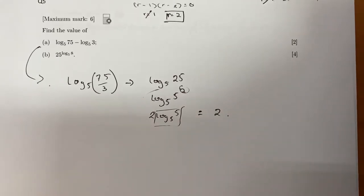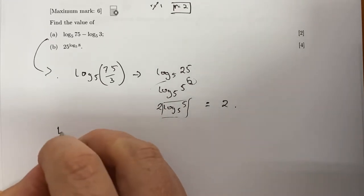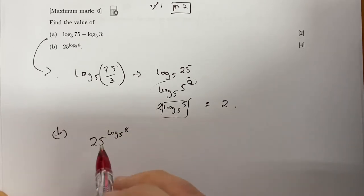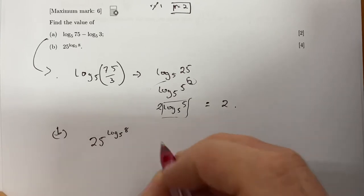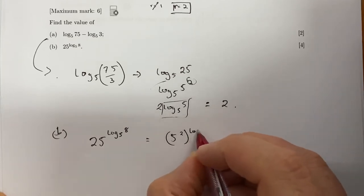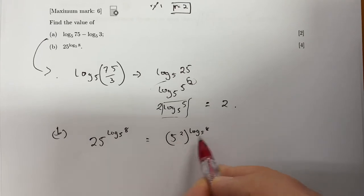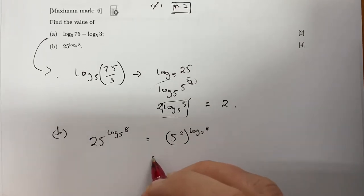Part b: we have 25^(log₅8). I'm going to start by changing this 25 - I'll call that 5². So we have (5²)^(log₅8). Powers of a power means we multiply those exponents.